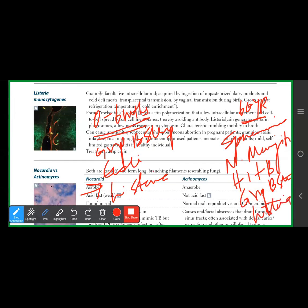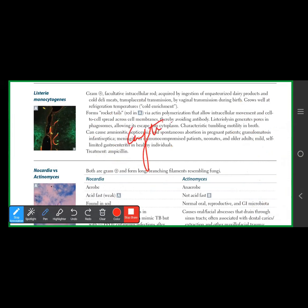For general bacterial meningitis, the empiric treatment is ceftriaxone and vancomycin. If Listeria is suspected, add ampicillin. If the patient is immunocompromised, you can also add gentamicin.